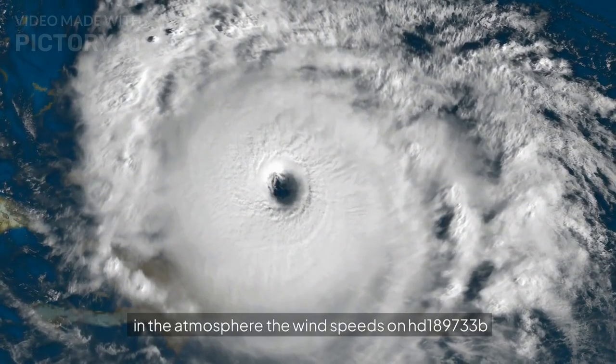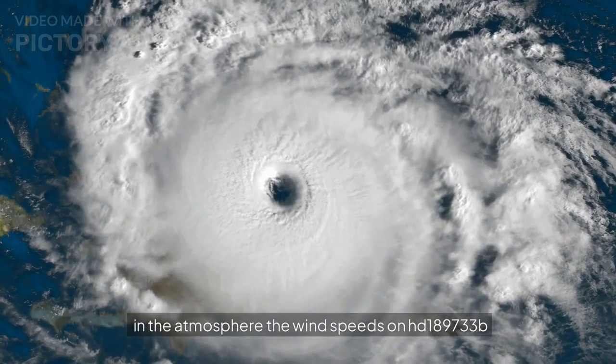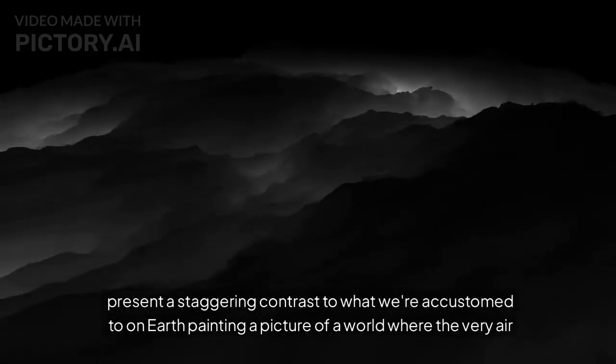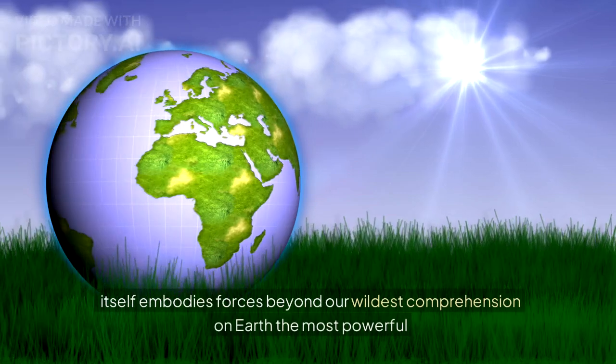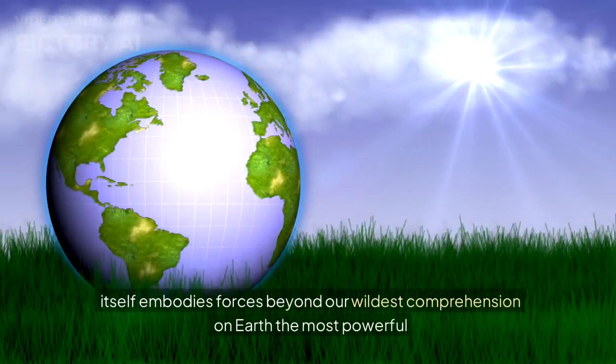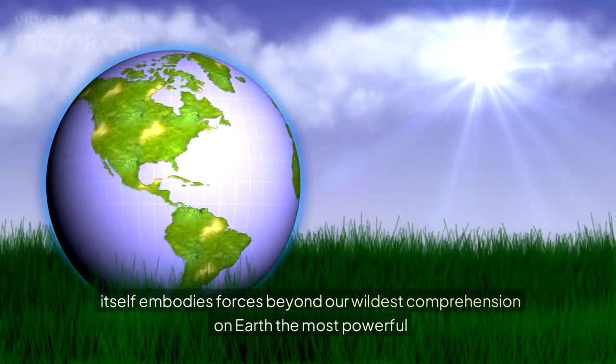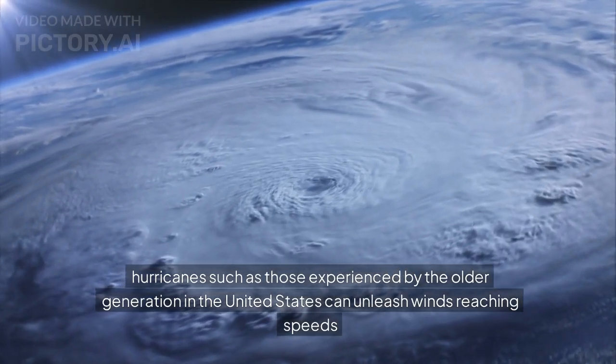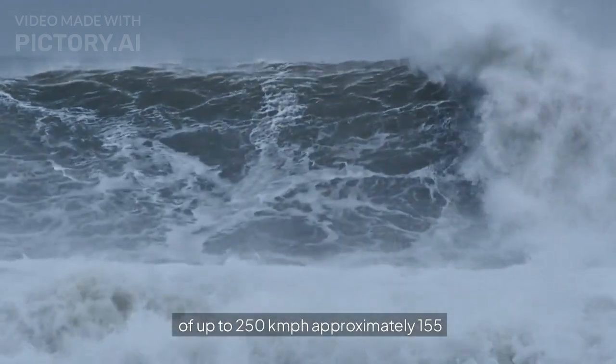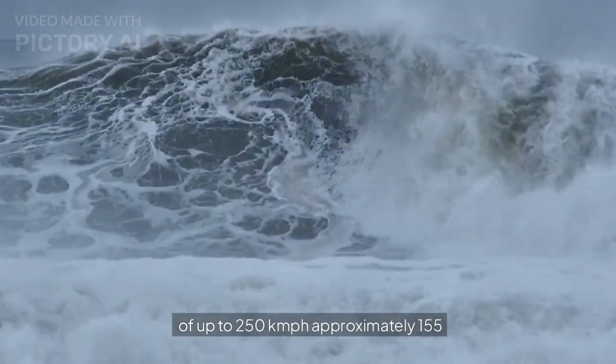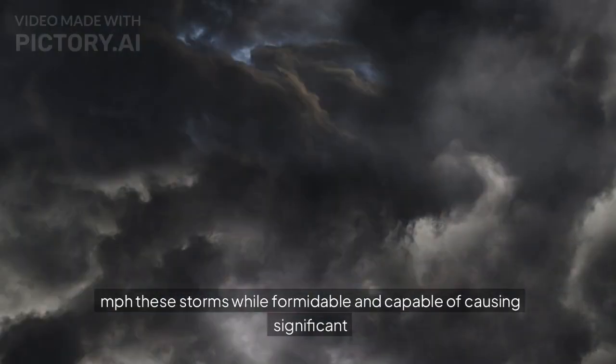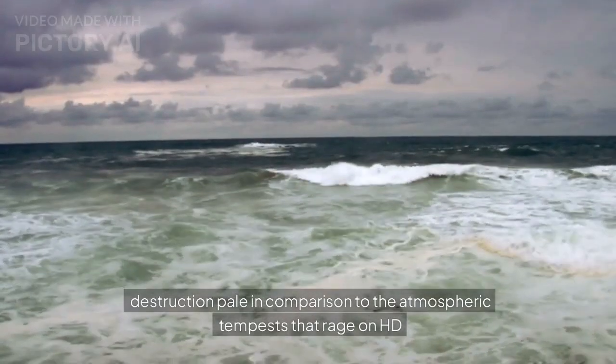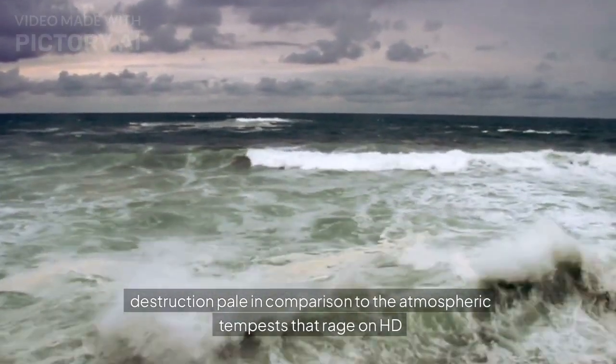The wind speeds on HD 189733b present a staggering contrast to what we're accustomed to on Earth, painting a picture of a world where the very air itself embodies force beyond our wildest comprehension. On Earth, the most powerful hurricanes can unleash winds reaching speeds of up to 250 km/h, approximately 155 miles per hour. These storms, while formidable and capable of causing significant destruction, pale in comparison.